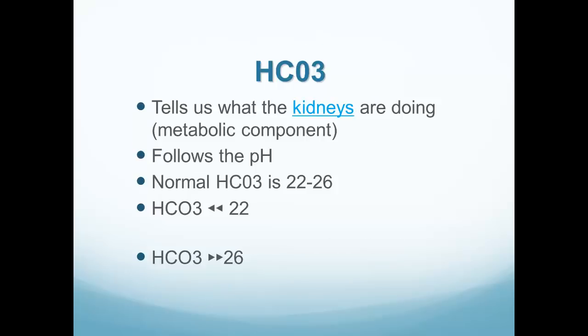The bicarb tells us about what the kidneys are doing — the metabolic component. Going back to the acronym ROME: Metabolic Equal means the bicarb goes the same direction as the pH. A normal bicarb is 22 to 26, so a bicarb less than 22 is acidotic, and greater than 26 is alkalotic. When we're lacking bicarb, which is the buffer that balances acid, we develop acidosis.